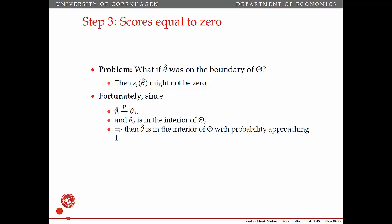Fortunately, we know that theta hat converges in probability to theta naught, and we assume for this theorem that theta naught is in the interior. Then theta hat will also be in the interior with probability approaching one. We're assuming that the true parameter lies in the interior and is not on a boundary, and then the estimator will not be either as n grows to infinity. Therefore, the scores will equal zero with probability approaching one.